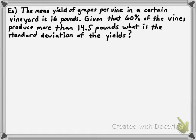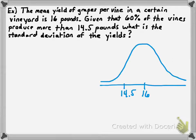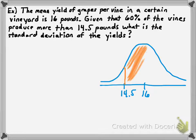In this case, 60% of the vines produce more than 14.5 pounds. Or, in some instances as in the next example, we'll have to find both the mean and the standard deviation. I'm going to start off with a drawing here to discuss our game plan. There's our normal curve with the mean of 16 labeled, and then 14.5 pounds, for which we know 60% of the vines produce more than that amount.